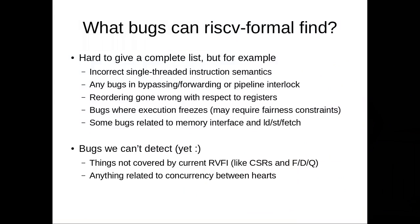What kinds of bugs can RISC-V Formal find? It's hard to give a complete list, but it can definitely find incorrect single-threaded instruction semantics - if you implement an instruction incorrectly, this will find it. It can find many bugs in bypassing, forwarding, and pipeline interlocks, as well as reordering errors. It can find freezes if you have the liveness check, and some bugs related to memory interfaces and load/store consistency, depending on cache line sizes.